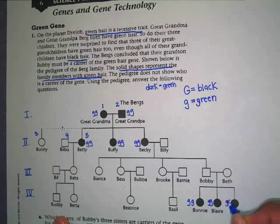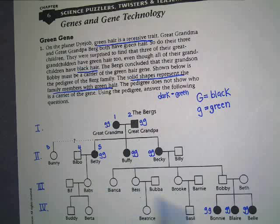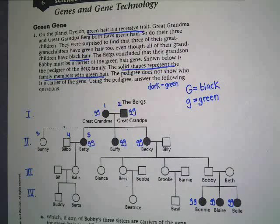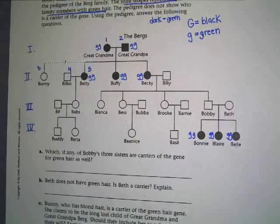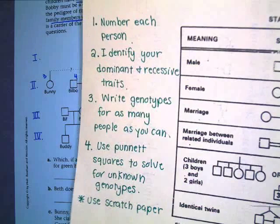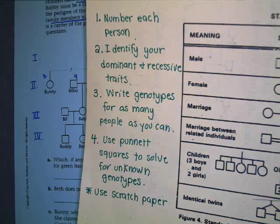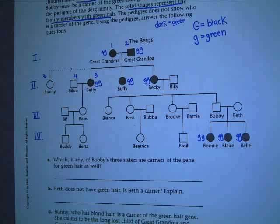Another way you can tell from a pedigree if a trait is recessive or dominant: there'll be more of the dominant people in the family than the recessive ones. So if you count all the clear shapes, there are more of those than the dark shapes — that's an unscientific way of doing it, but you can figure it out that way. Step four says use Punnett squares to solve for unknown genotypes, and you need to use scratch paper.